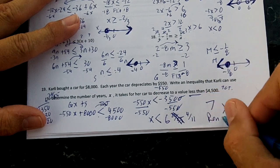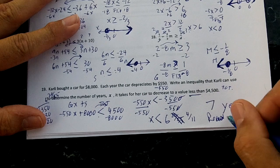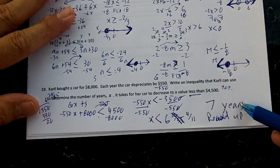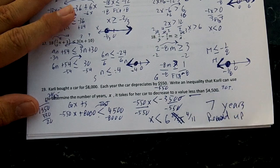So on this one, I'm rounding up. Sometimes you'll round up, sometimes you'll round down. You've got to read the problem. So in seven years, it's going to be less than $4,500.